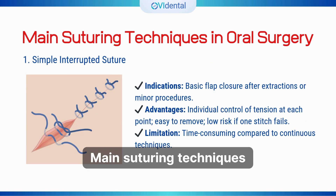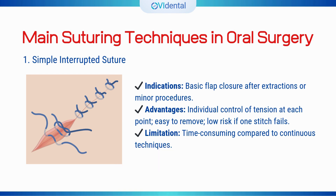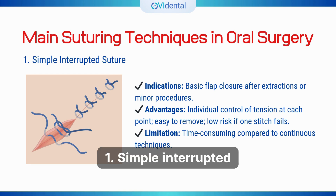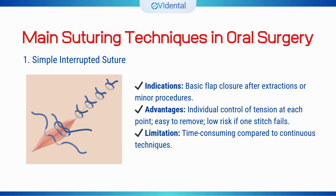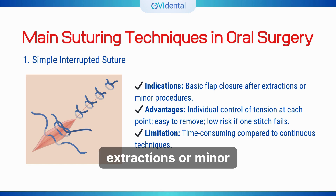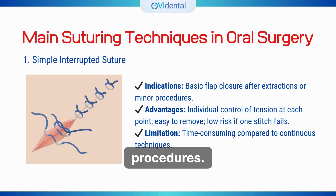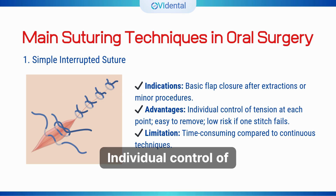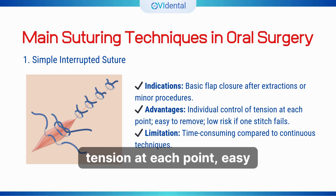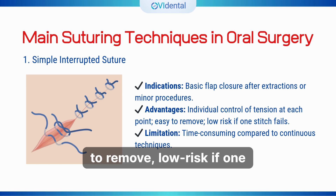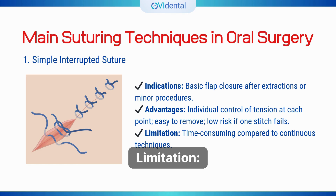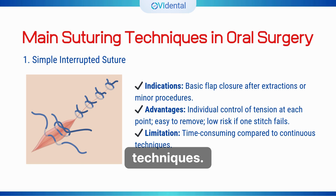Main suturing techniques in oral surgery. 1. Simple interrupted suture. Indications: basic flap closure after extractions or minor procedures. Advantages: individual control of tension at each point, easy to remove, low risk if one stitch fails. Limitation: time-consuming compared to continuous techniques.